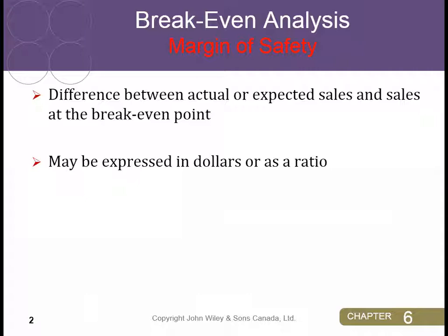For example, if your projected sales for the year are $375,000, and your break-even point — the point at which you neither make nor lose money — is $300,000, then your margin of safety is the difference between those two figures. You're expecting to sell $375,000 worth of product and your break-even is $300,000, so your margin of safety is $75,000. Basically, how much can your sales drop before you're in jeopardy of losing money or making no money?